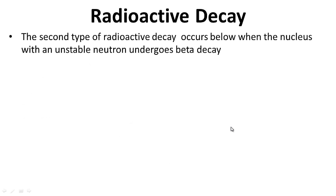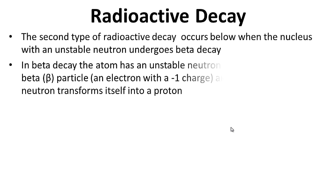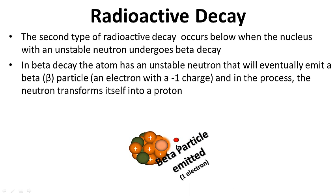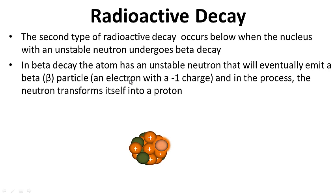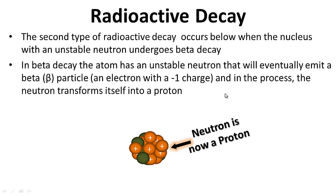The second type of radioactive decay occurs when the nucleus with an unstable neutron undergoes beta decay. In beta decay, a beta particle is emitted. The atom has an unstable neutron that will eventually emit a beta particle — this is basically an electron with a minus 1 charge. In the process, the neutron transforms itself into a proton.